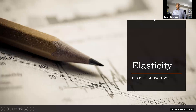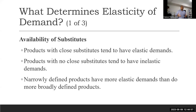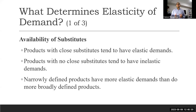The first determinant is availability of substitutes. If a product has a perfect or very close substitute available, then if the price of this product is increased, people will buy the other one. Products which have no close substitute are inelastic in nature and their responsiveness toward price is very limited. Products with close substitutes available have elastic demand, while products with no close substitutes tend to have inelastic demand.